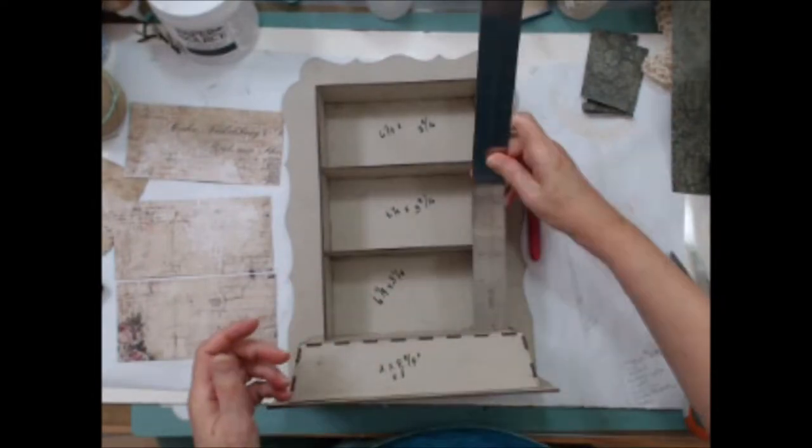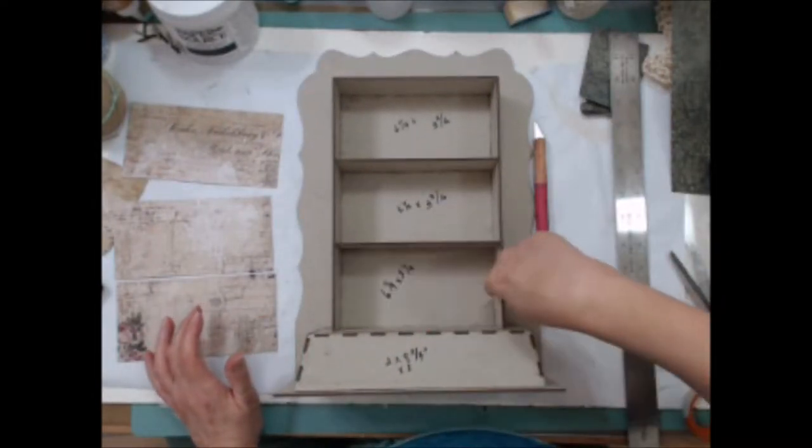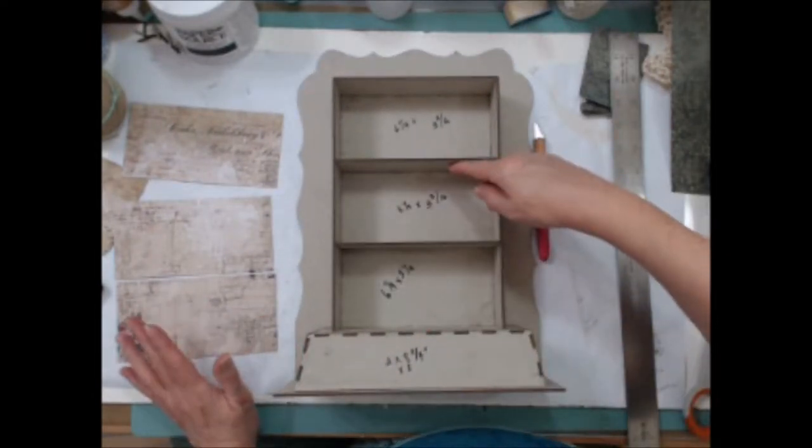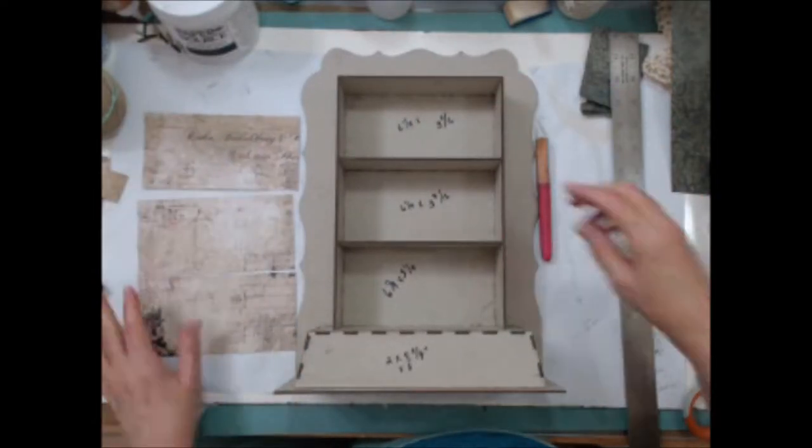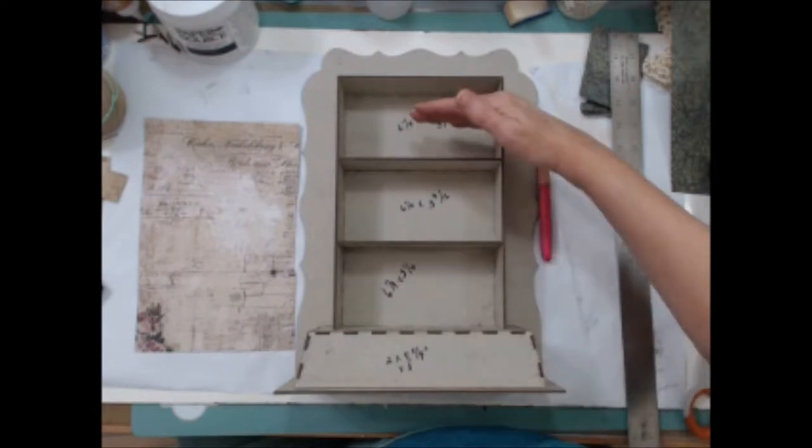First I took some measurements and determined that I needed three pieces cut consecutively from the paper to measure six and a quarter by three and a quarter. Keep the design in order as you glue them onto the back of the display.